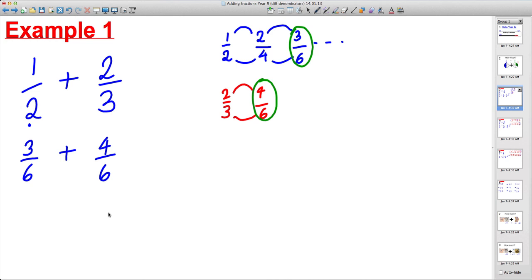And now we can do the question. Because a half is the same as 3 sixths, 2 thirds is the same as 4 sixths. But reading this way, 3 lots of sixths plus 4 lots of sixths is 7 sixths. And we're done.